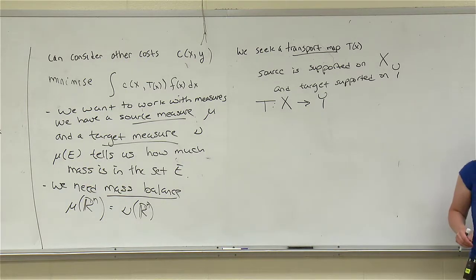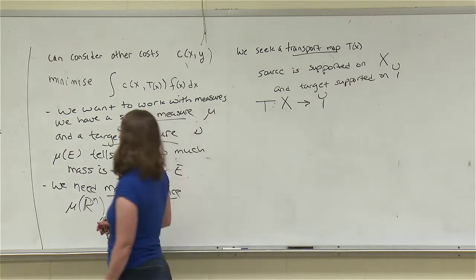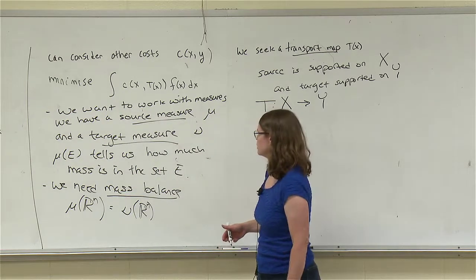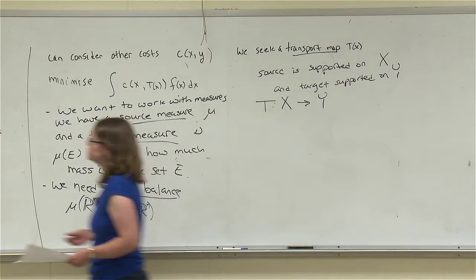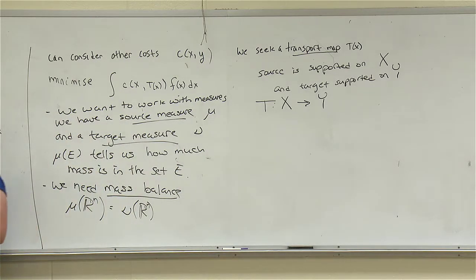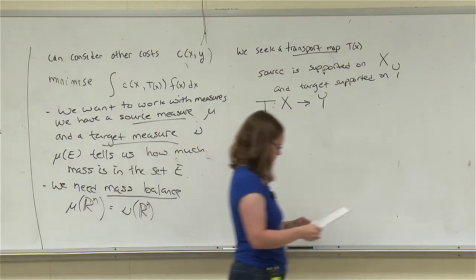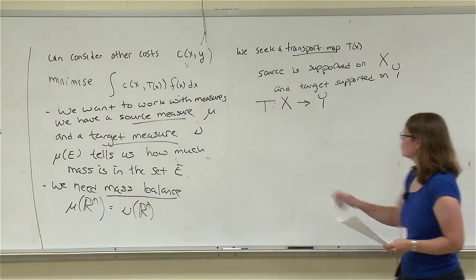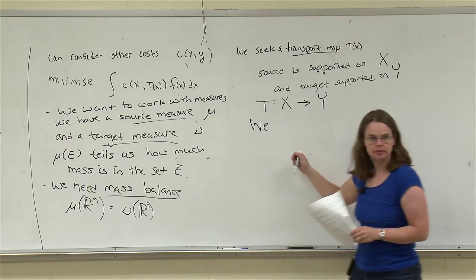We want to conserve mass — not just globally, but locally. When we've applied map T, the source measure should be transformed into the right distribution of mass. Let's draw a picture: this is my starting distribution. We map everything through T and we should get something that produces our desired target nu.